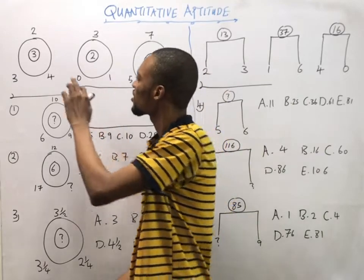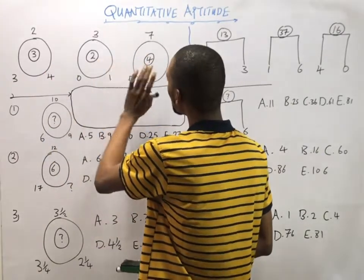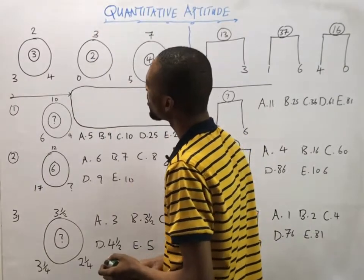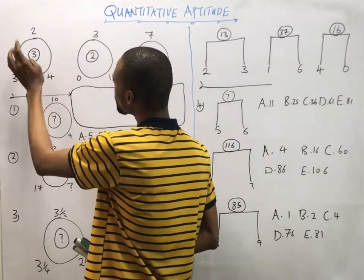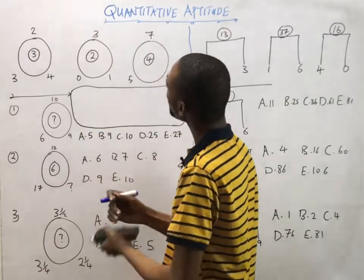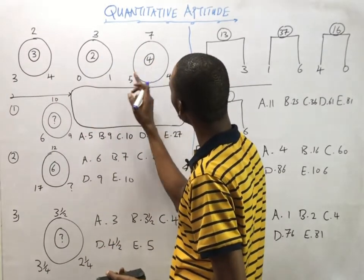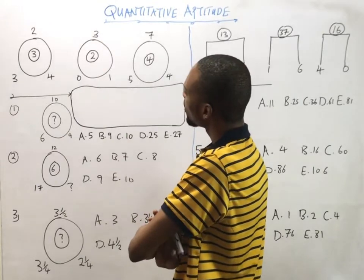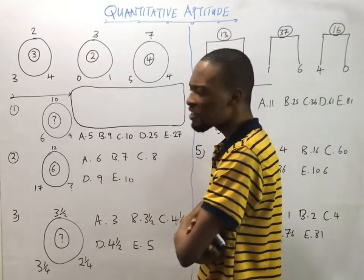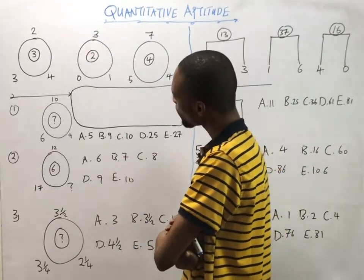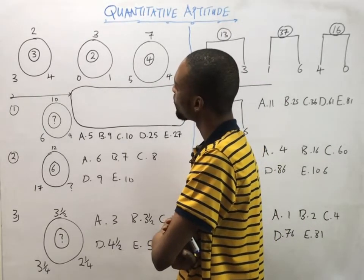Now look at this set of questions. These are the samples: one, two, three are the samples. So here we have three, four, two and three. How do we arrive at these things? We have 0, 1, 3, 2, 7, 4, 5, 4. If I remove one of them, how do I get it? What is the formula for this type of question?